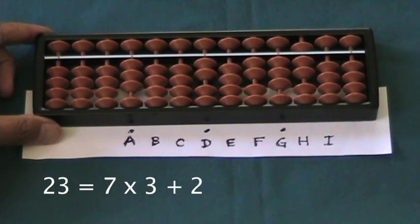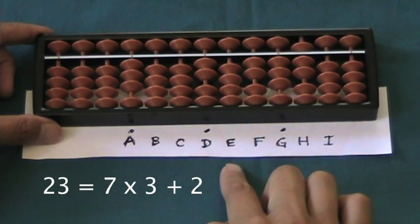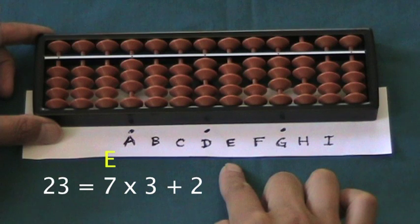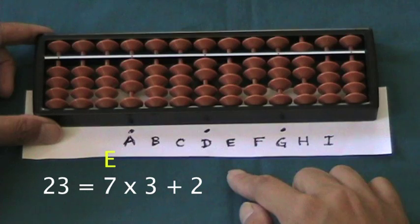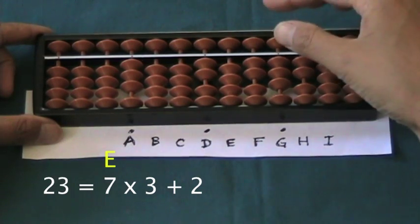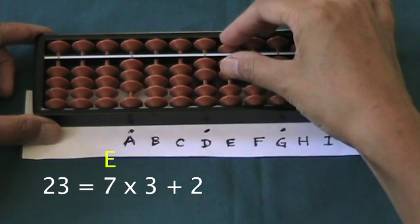We'll set the 7 as the quotient figure on rod E. That's moving to the right from the first digit of the quotient, the 2 on rod D. Now, we take the next rod to the right and put this quotient 7 on rod E. No collision yet with the dividend.